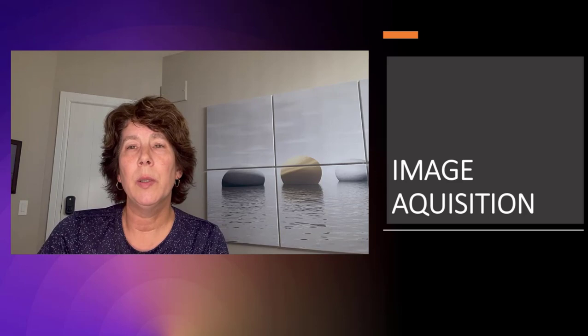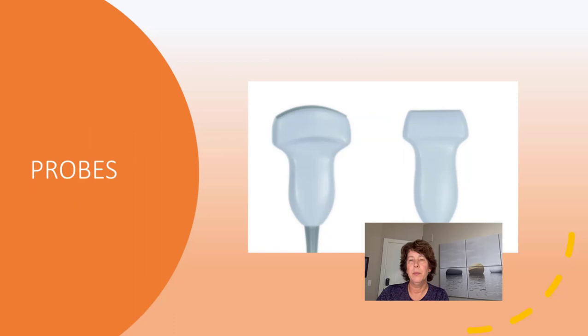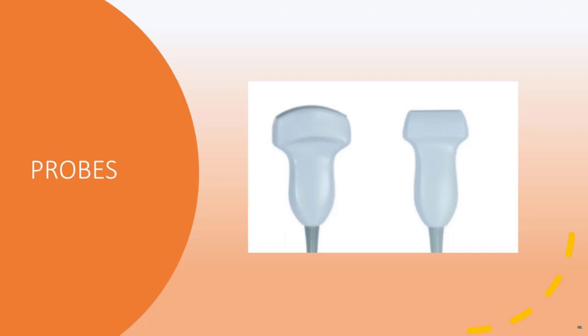Let's look at how we go ahead and do our image acquisition. What probes do we need? How do we position our patient? Where do we put our probe? And how do we identify and fine-tune our scanning? For most adult patients, we will use curved linear probes. In pediatrics or in very skinny patients, sometimes the higher frequency linear probe will do. But for the most part, we need that increased penetration that the low frequency probe will give us.